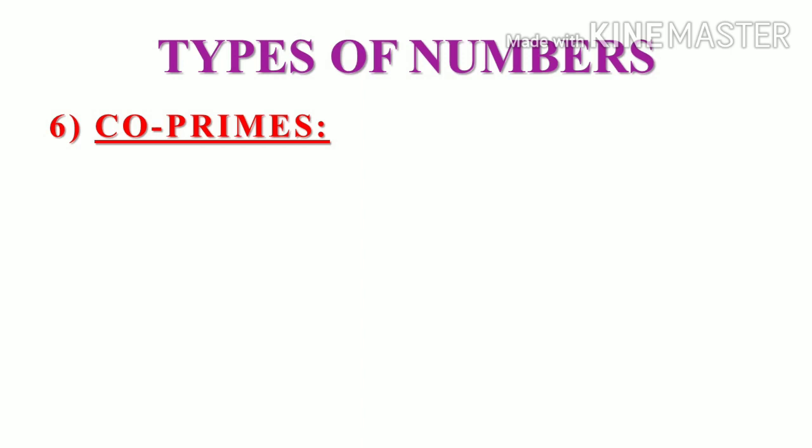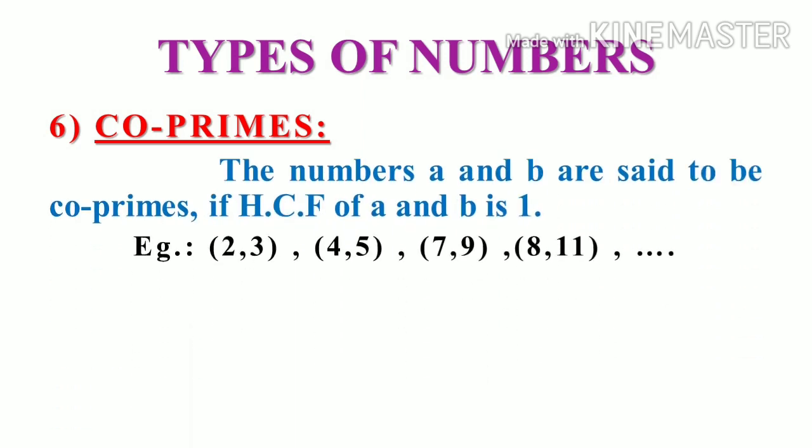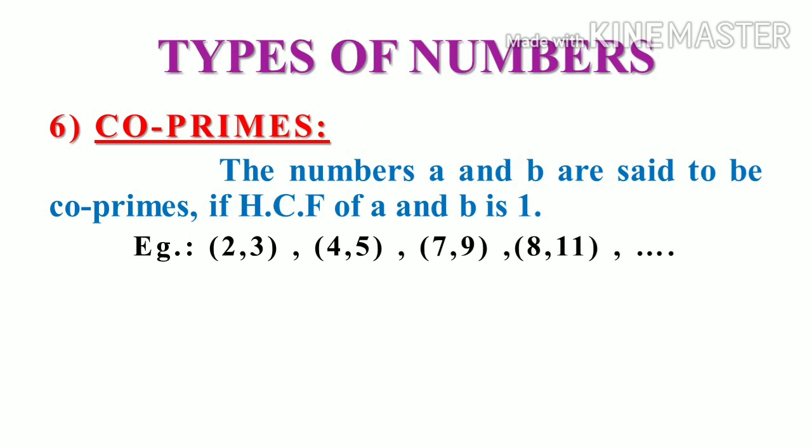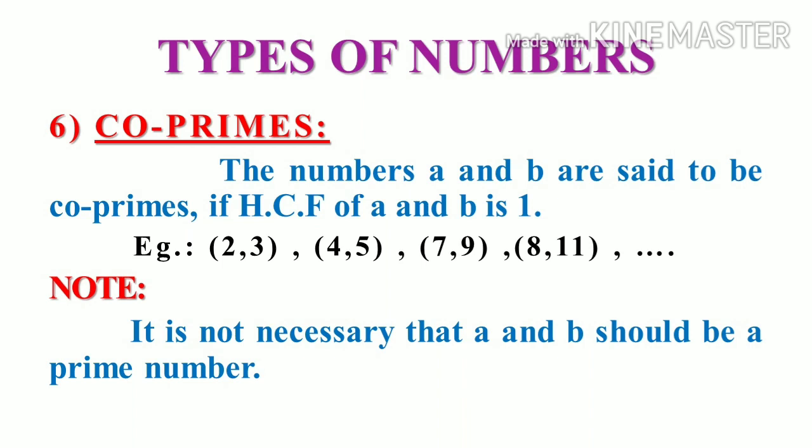Next, coprimes. If the numbers A and B has HCF as 1, then we call A and B as coprimes. Here, if we take 2 and 3, if we take HCF of 2 and 3, it is 1. 4, 5 is 1. 7, 9 is 1. 8, 11 is 1. HCF as 1 will get only if both the numbers does not have a common factor. It is not necessary that A and B should be a prime number. Whereas, as in the name we have coprime, we should not get confused. Whether the number is prime or composite, it does not matter. The thing is HCF of those two numbers should be 1. Then we can call those two numbers as coprimes. When combinedly they don't have common factor, that is the meaning of coprimes.